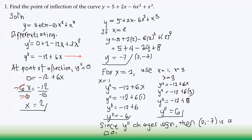Conclusion: since y'' changes sign as x increases through a = 2, the point (2, −7) is a point of inflection. The test is the same as the first derivative test — pick one value to the left, one to the right, and check if the sign changes. Whether from negative to positive or positive to negative, if the sign changes, it is a point of inflection.